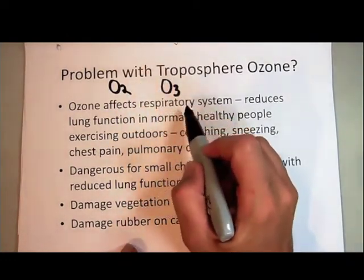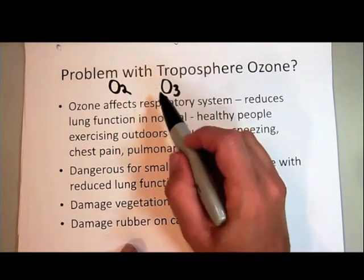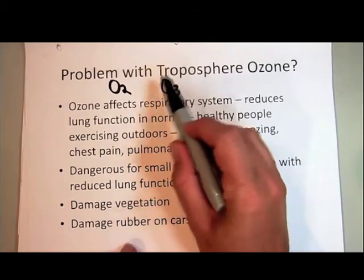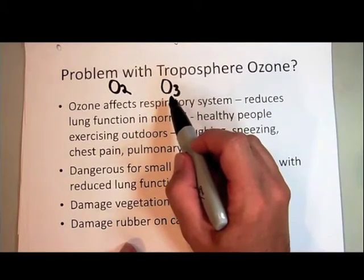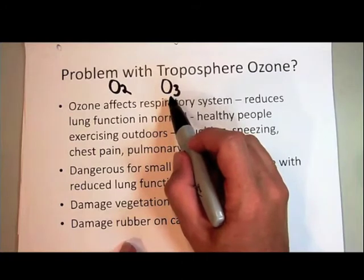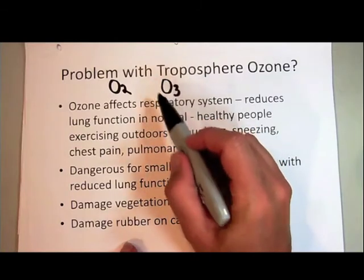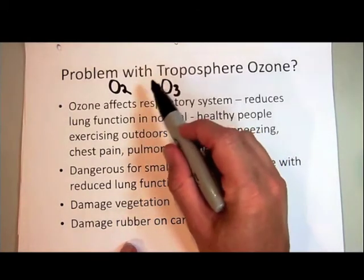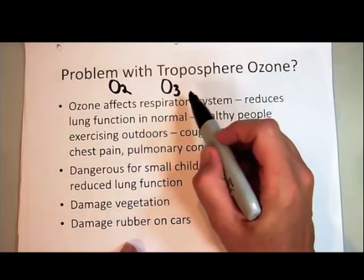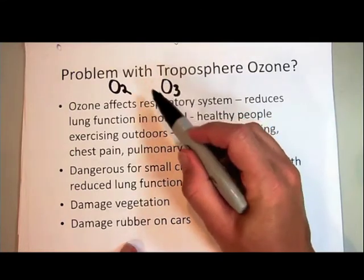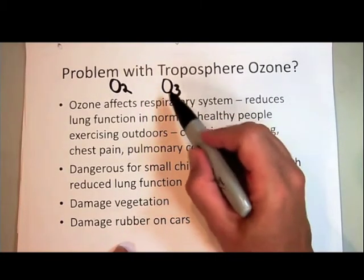Ozone is still considered elemental oxygen, just in a different form — O3. When you have three oxygen atoms stuck together, it's very unstable and therefore highly reactive. That's what makes it so dangerous. When it comes in contact with something else, such as skin, rubber, or plant material, it's going to react very quickly and oxidize, breaking the bonds of whatever it contacts and adding oxygen to that compound.